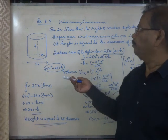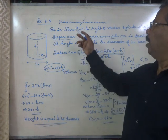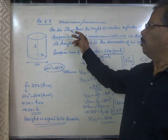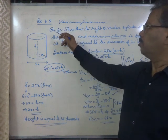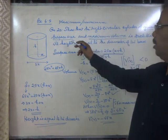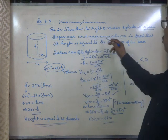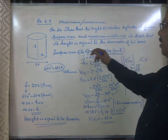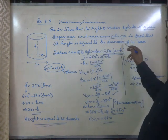One more question from Maximum Minimum. Exercise 6.5, Question number 20: Show that the right circular cylinder of given surface area and maximum volume is such that its height is equal to the diameter of the base.